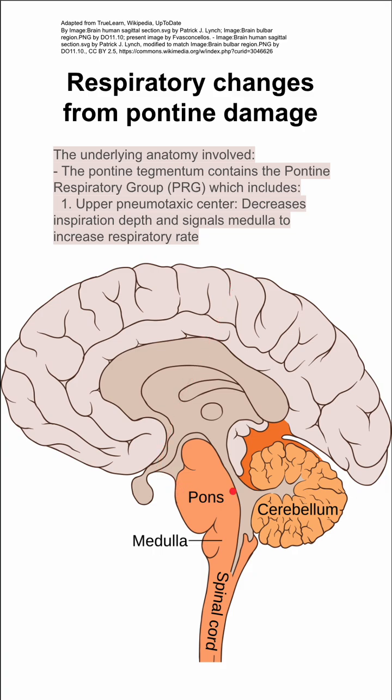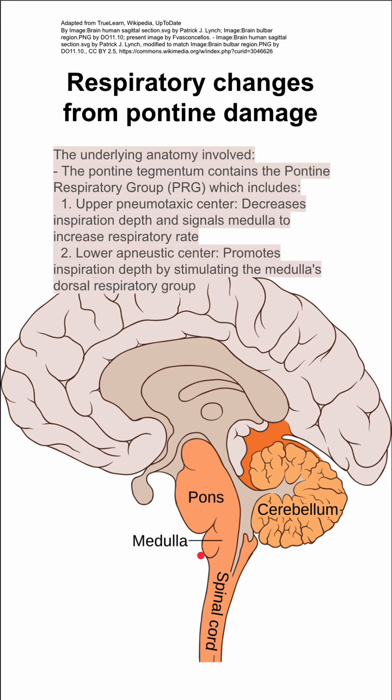The pons is right above the medulla here. The pontine respiratory group also includes the lower apneustic center, which promotes inspiration depth by stimulating the medulla's dorsal respiratory group.